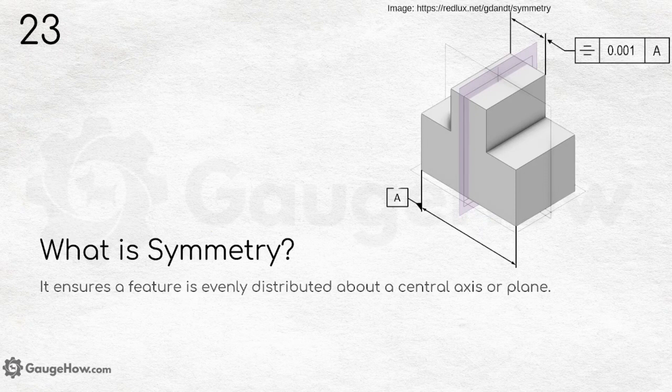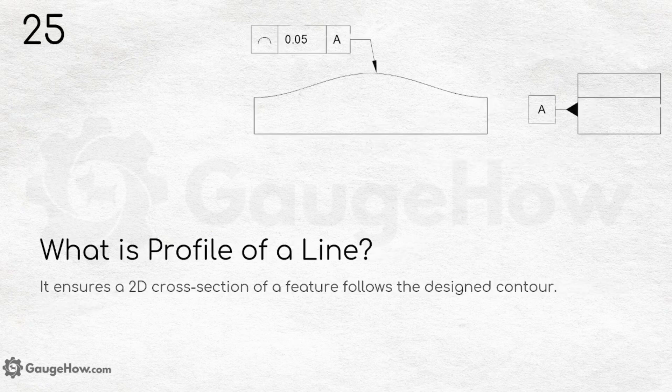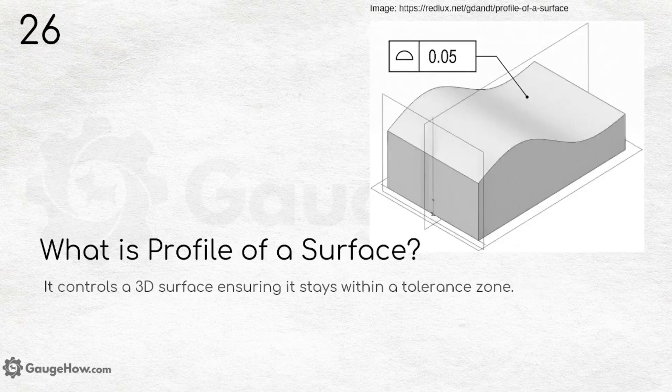What is symmetry? It ensures a feature is evenly distributed about a central axis or plane. Similar to concentricity, symmetry is also one of the widely used symbols in GD&T. What are profile tolerances? They control the shape of a surface and include profile of a line — which ensures a 2D cross-section of a feature follows the designed contour — and profile of a surface, which controls a 3D surface ensuring it stays within a tolerance zone.